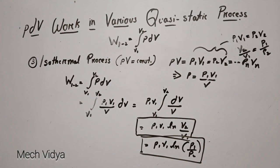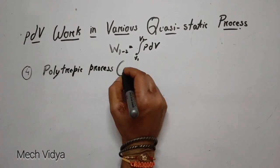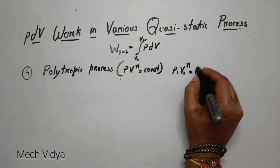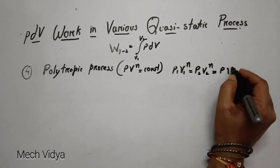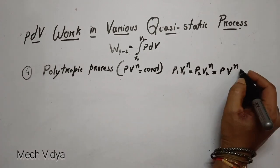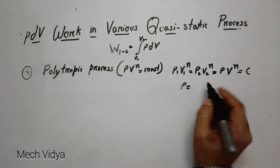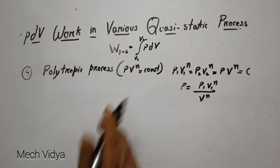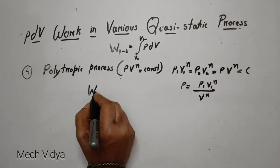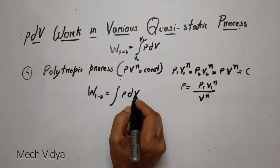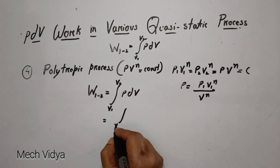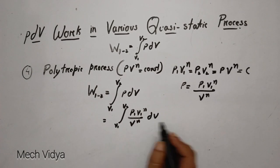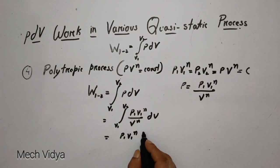The next case is the polytropic process, where P·V^N equals constant. Expanding this: P1·V1^N = P2·V2^N. From this, P can be written as P1·V1^N divided by V^N. Substituting into the main equation, W = integral of P dV, we replace P with P1·V1^N / V^N. Since P1·V1^N is constant, it comes out of the integral, leaving the integration of (1/V^N) dV, which can be rewritten as V^(−N) dV.